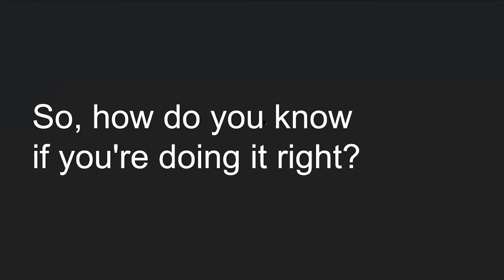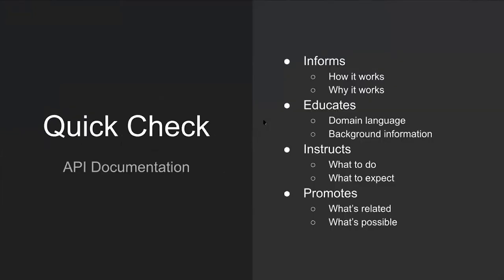So how do you know if you're doing it right? I created a quick check based on the four pillars. Good API documentation informs — it's transparent about how and why it works. It educates — explaining domain-specific language and giving context and background. It instructs — it's technically correct and explains what to do and what to expect. And it promotes — exposing what's related and what's possible beyond the obvious.